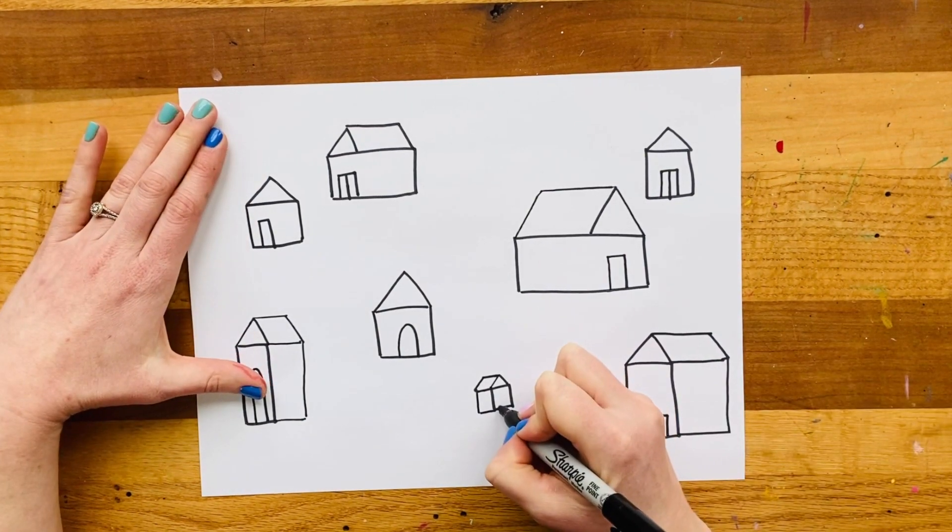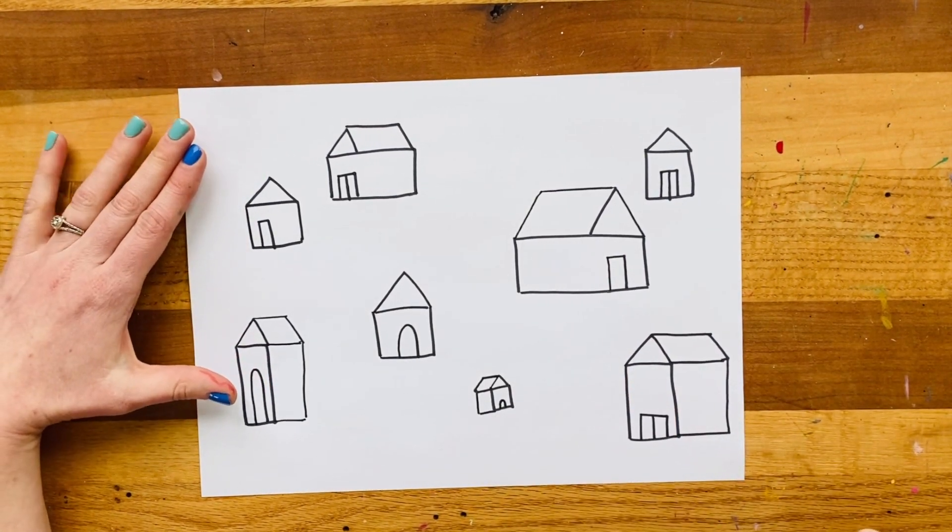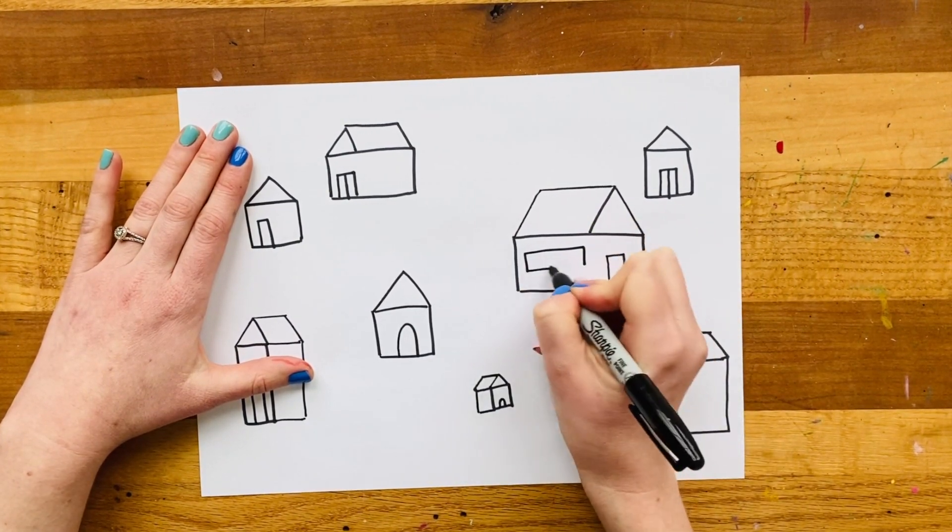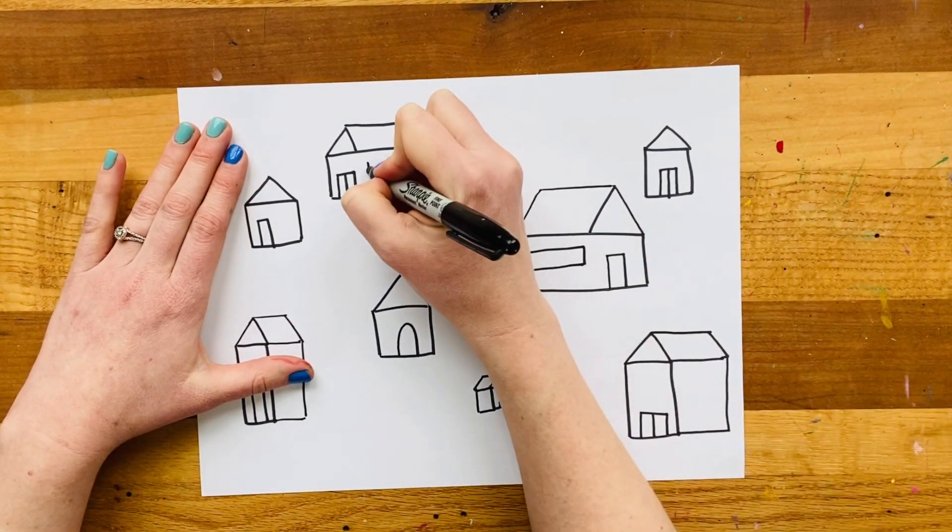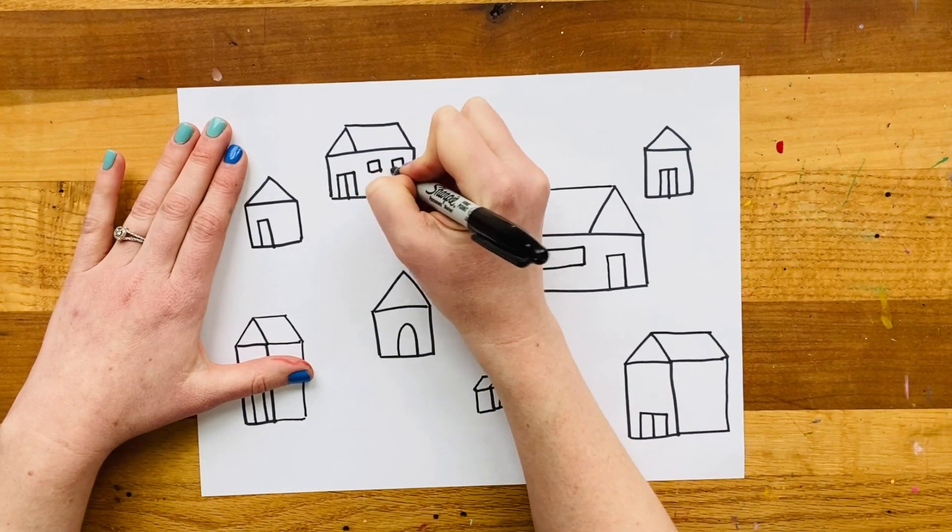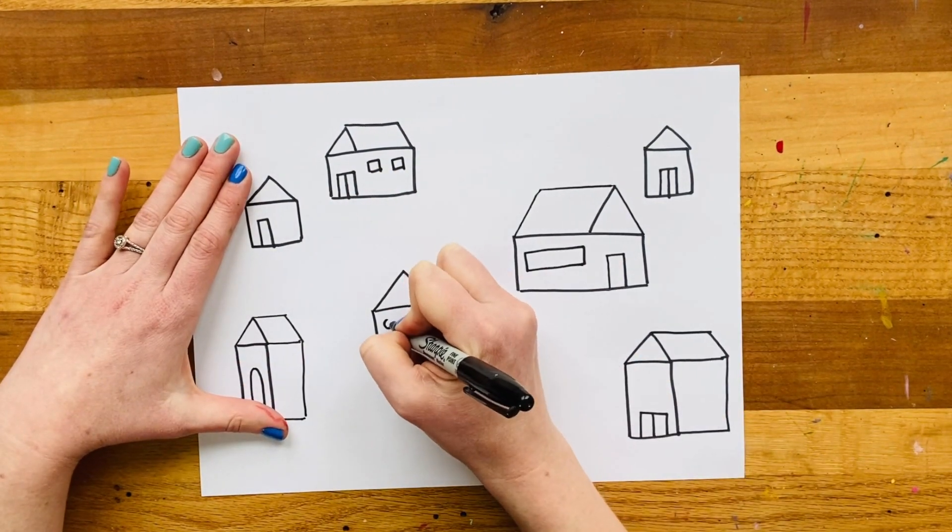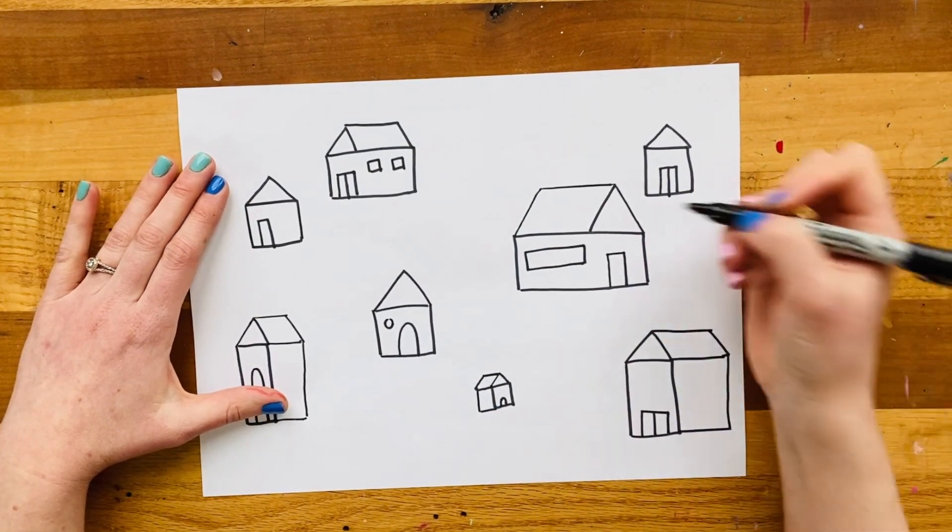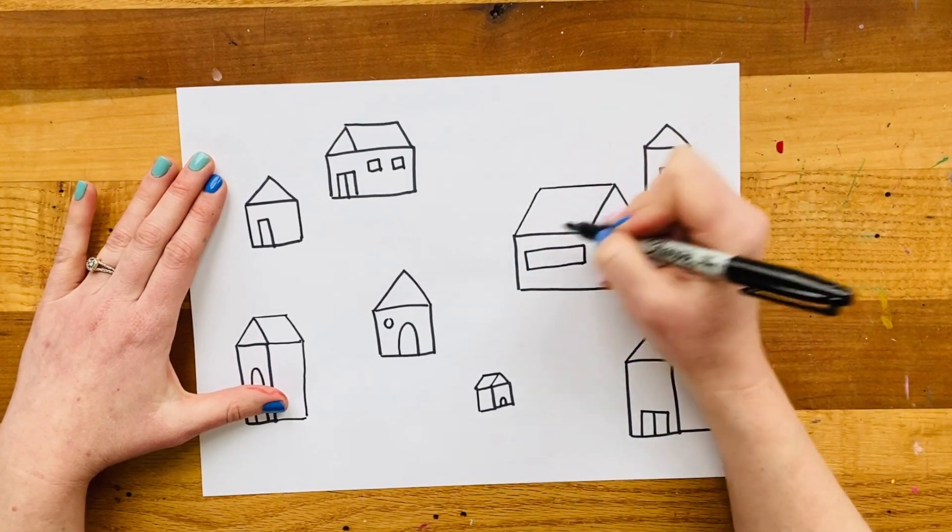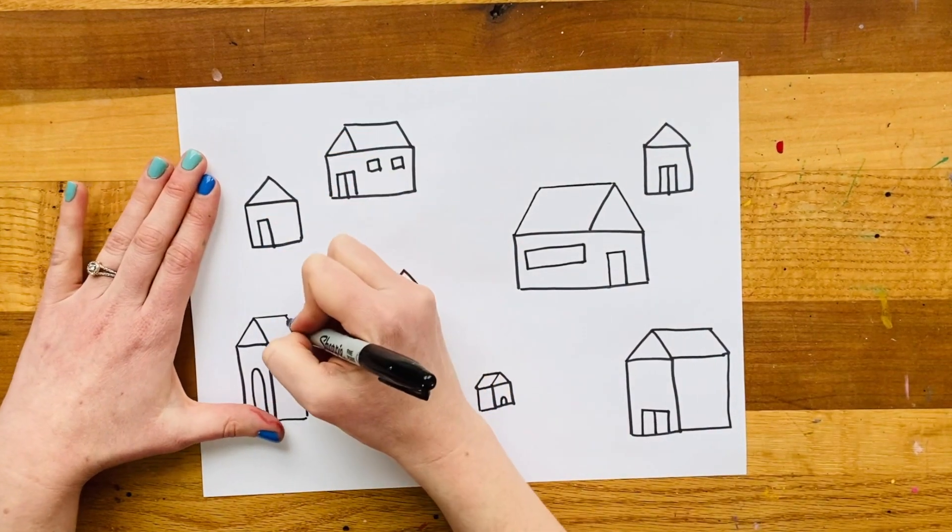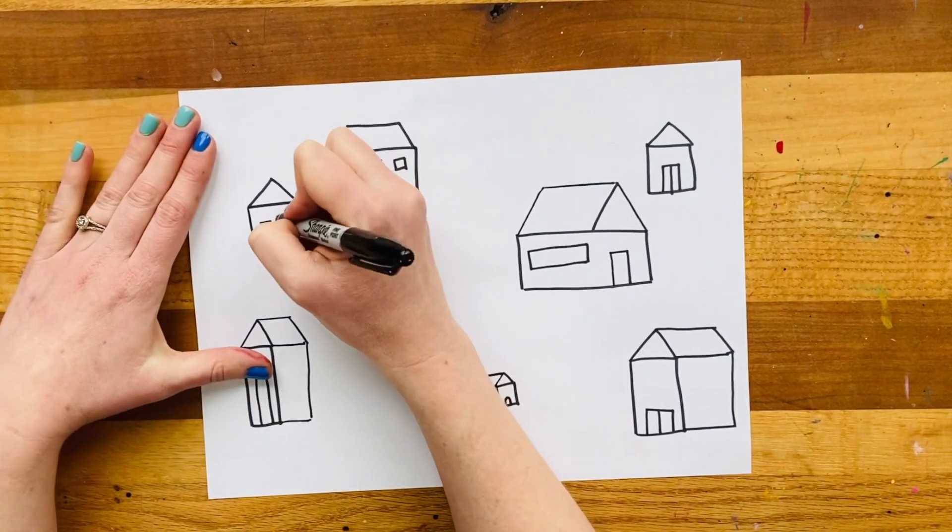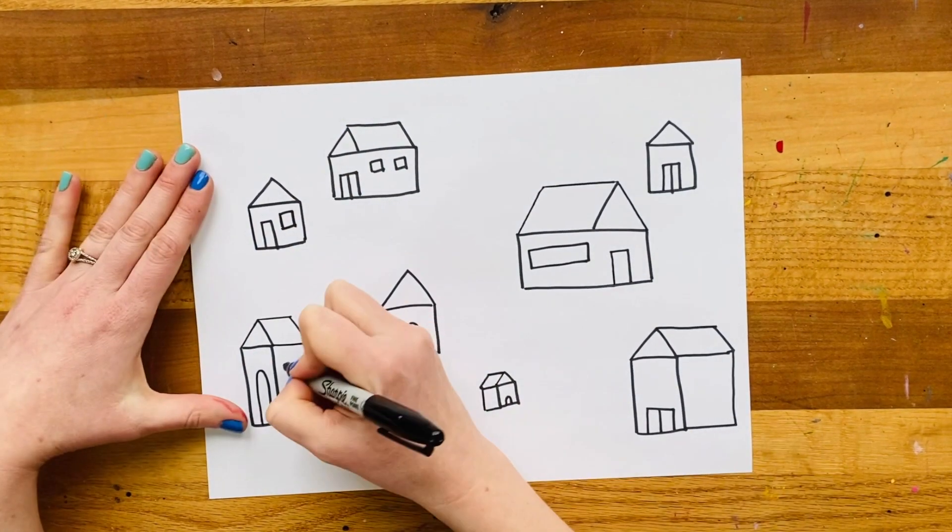Now we also need to add some windows. And our windows, again, can be nice and long using those rectangles. They could be a few squares next to each other. But realistically, today, we're mostly just using triangles, rectangles, and this right here is called a parallelogram, meaning that it goes two directions diagonal and two directions parallel. So I'm going to finish adding some windows.